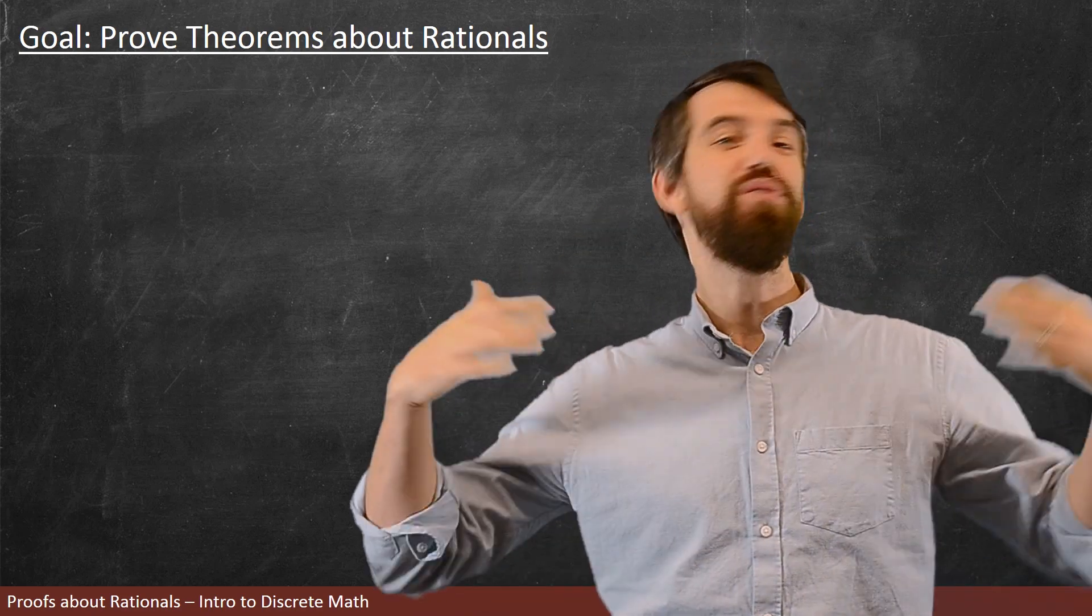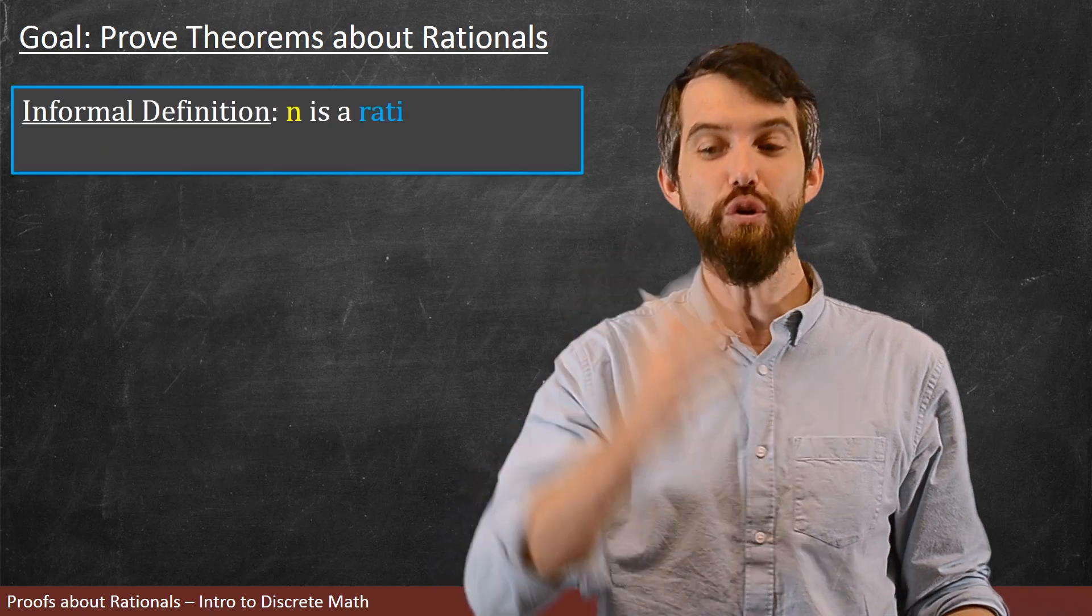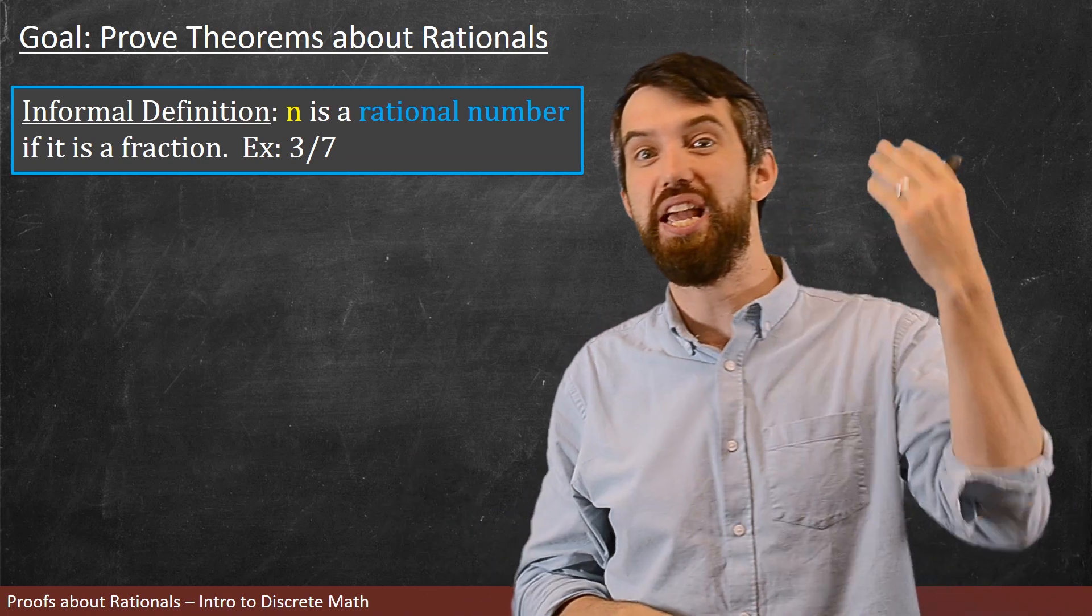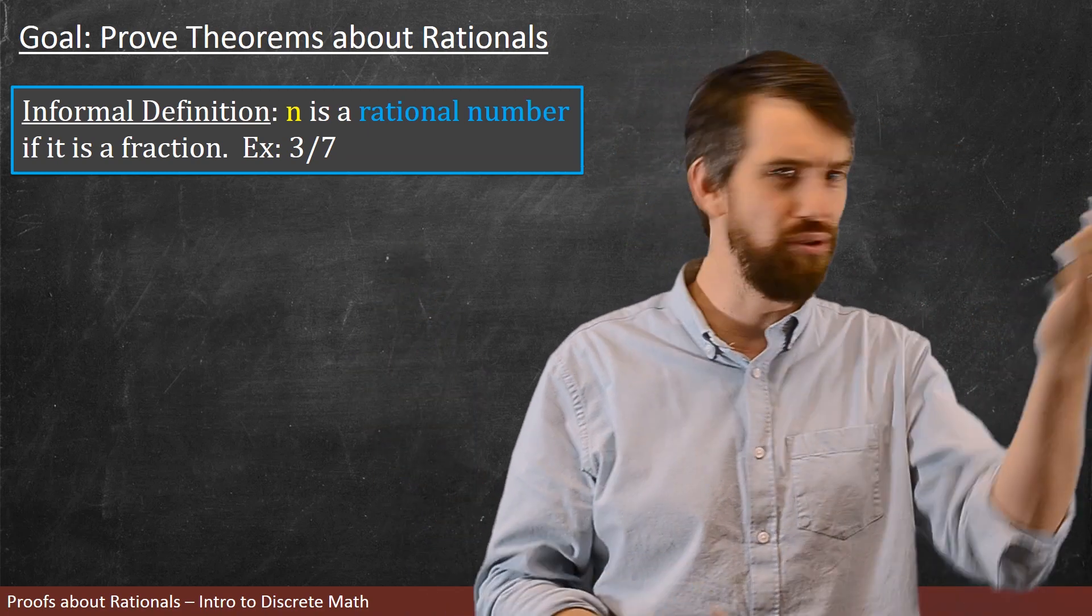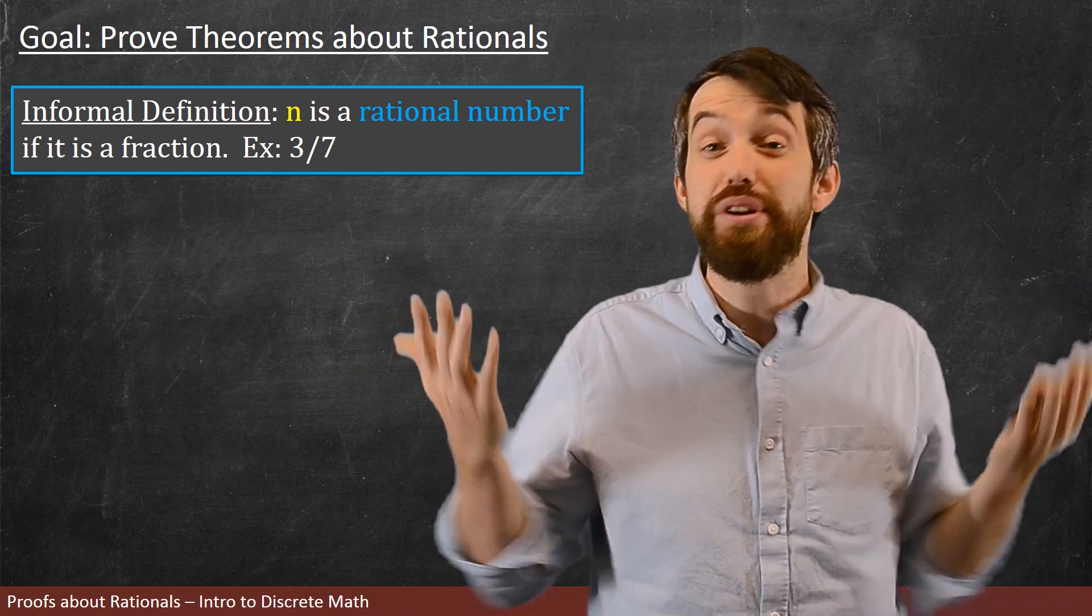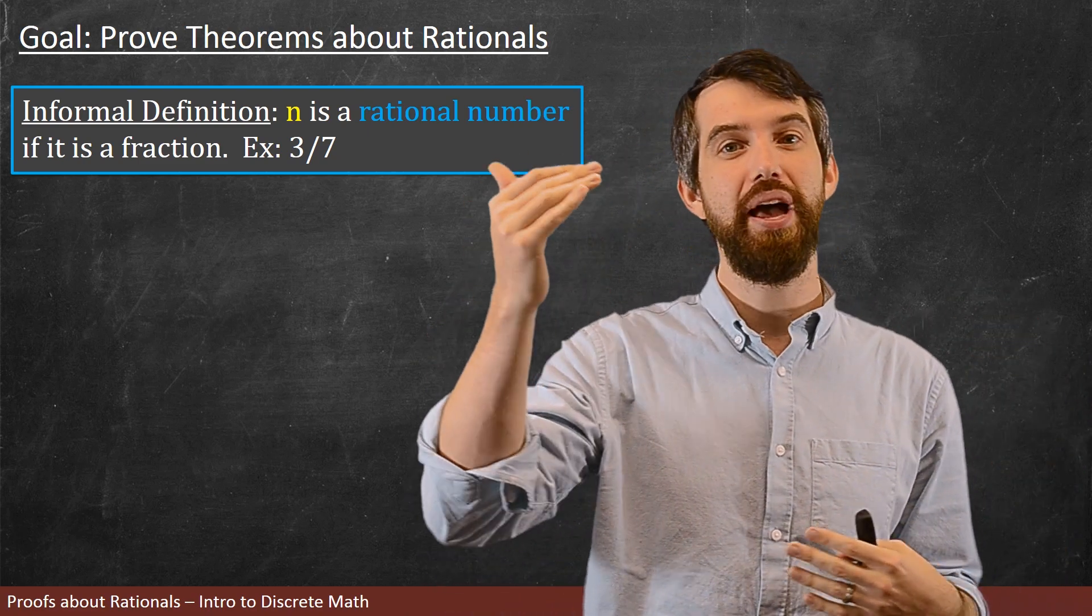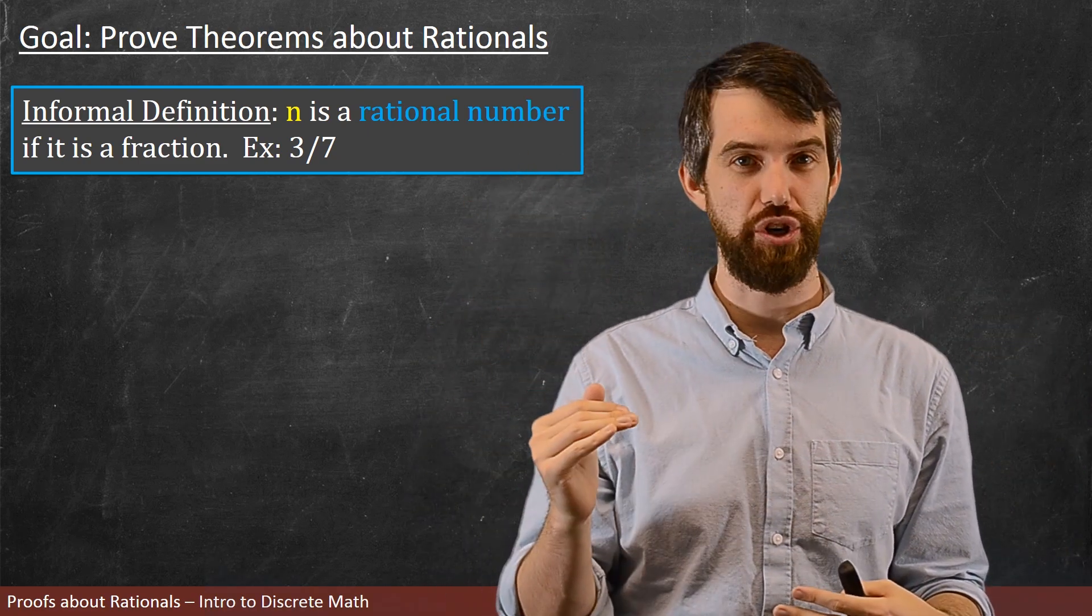So, what even are rational numbers? My informal definition is that a rational number is a fraction of different integers, something like 3 divided by 7, or 2 divided by 4, or 100 divided by 1. Anything like that, where you've got an integer on the top and a non-zero integer on the bottom.